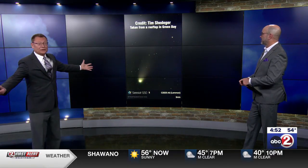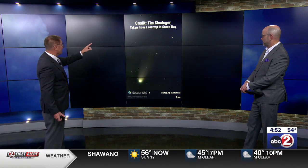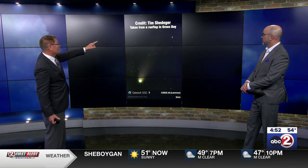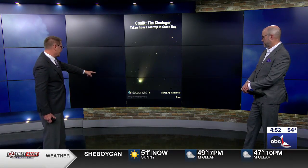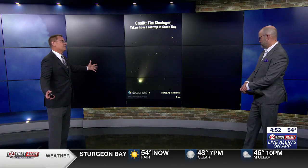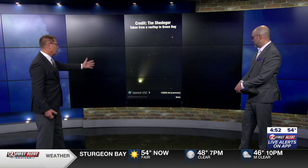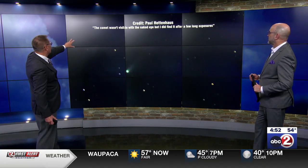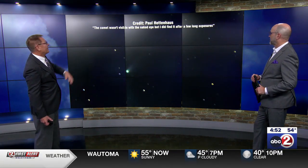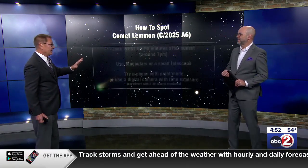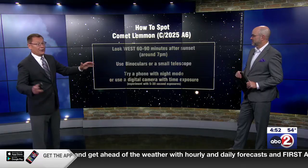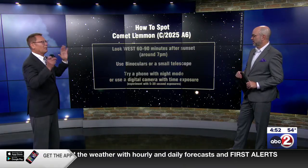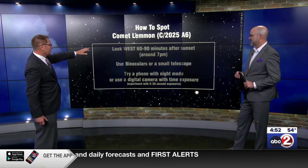A few good patrons of WBAY uploaded pictures to WBAY.com. Tim Schettiger, taken from a rooftop in Green Bay — beautiful picture. This was taken by a C-Star S50 — a digital telescope — looks like a three-minute exposure, but that is just a gorgeous view. And here's another picture from Paul Hettenhaus: 'The comet wasn't visible to the naked eye, but I did find it after a few long exposures.' We can still see it if you use a cell phone or a digital camera, but we only have about two weeks left before it's probably way too dim. Look west, 60 to 90 minutes after sunset.